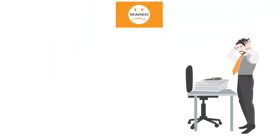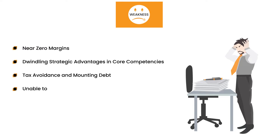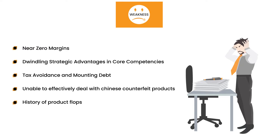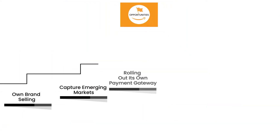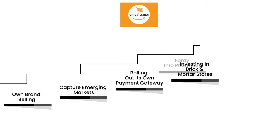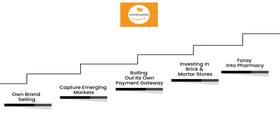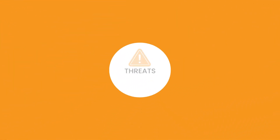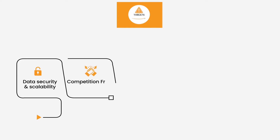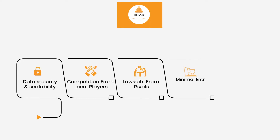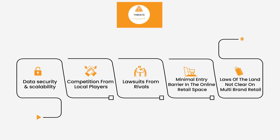Amazon's weaknesses explain the internal strategic variables that present challenges in developing or enhancing the firm. Amazon's prospects identify external elements that the corporation may employ to improve its operations, such as expansion in the worldwide e-commerce sector. This part of Amazon's threat analysis considers external variables that decrease or hinder business expansion and performance, such as in e-commerce operations.